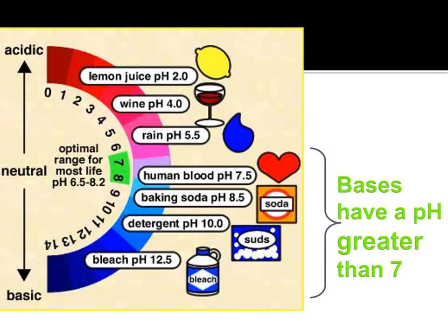The last thing you'll add for properties of bases is that they have a pH greater than 7. The further away a pH is from the neutral 7, the more basic or stronger that base will be. So a pH of 14 is much stronger than a pH of 10. The further away we get from neutral 7, the stronger that base becomes.